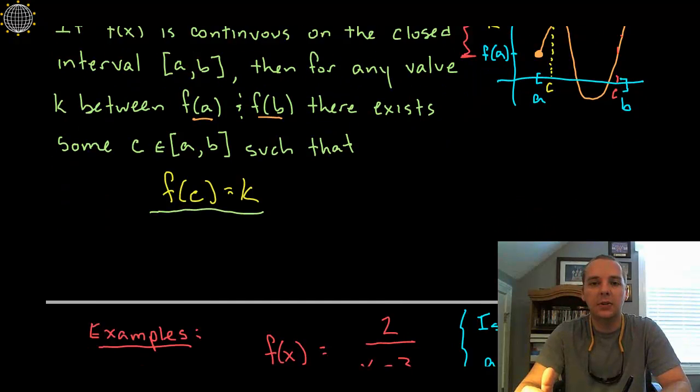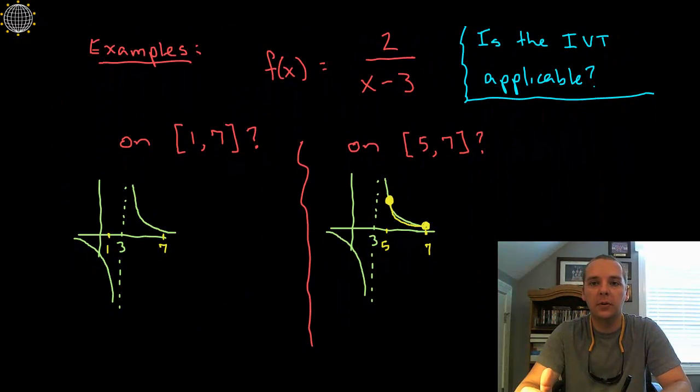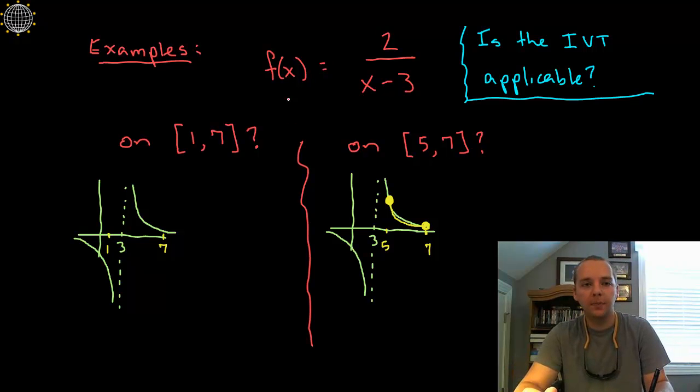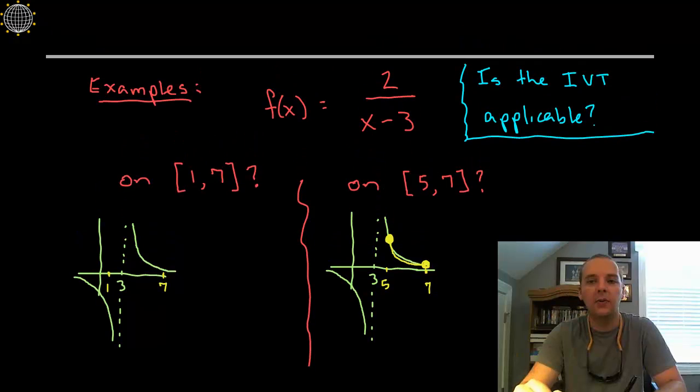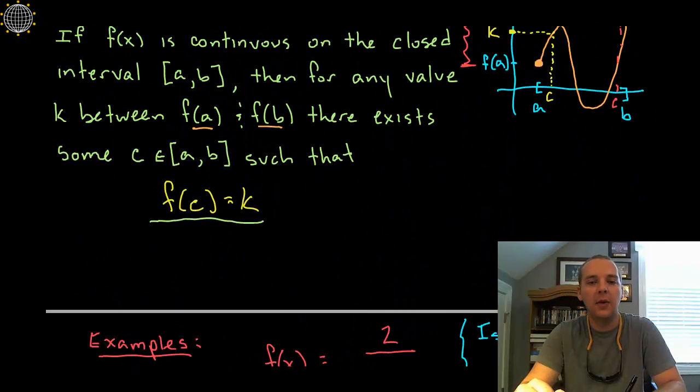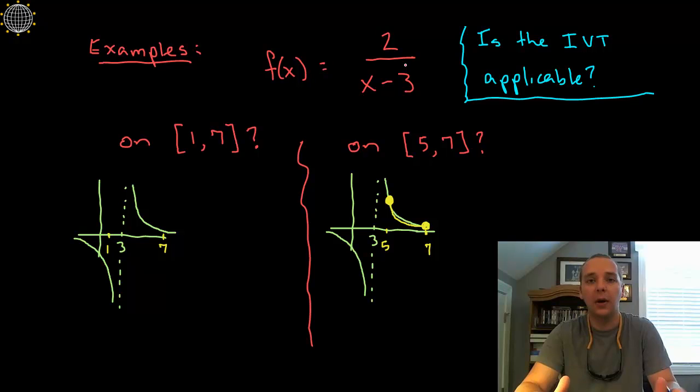So let me start with just some general comments and then we'll look at a specific example. Alright, so here's a function 2 over x minus 3. Now as soon as I see that, red flag starts going off in my head because I automatically see that this guy is not continuous everywhere because I see that he has a vertical asymptote at 3. So that's something to be careful about.